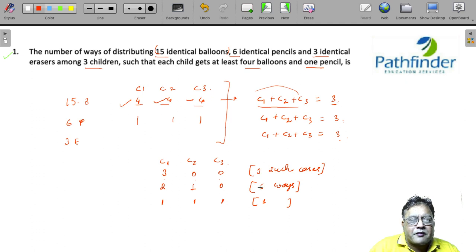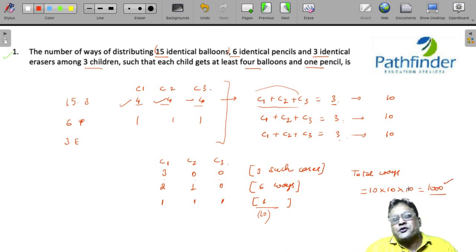So what is the total number of ways? 3 + 6 + 1 = 10 ways. So there are 10 ways in which you can distribute the remaining 3 balloons. Similarly, we can conclude that there are 10 ways in which we can distribute the 3 pencils, and there will be 10 ways in which we can distribute the 3 erasers. So total ways must be 10 × 10 × 10 = 1000, which is your answer.